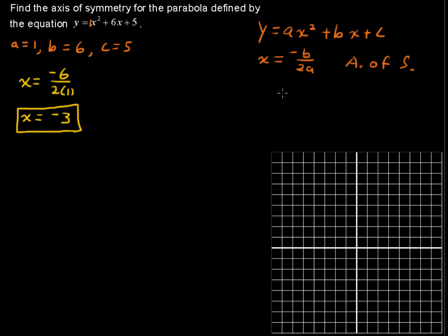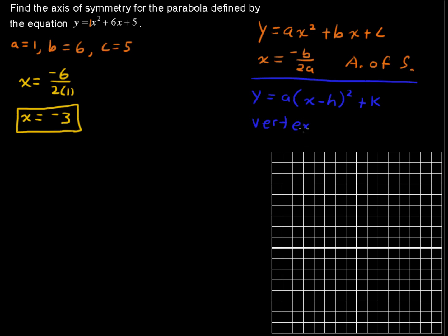Let's talk about another way to do this. If you have the equation in the form y equals some coefficient multiplied by the quantity x minus h, squared, plus k, then the vertex of the parabola is going to be at the point (h, k). So let's complete the square of this parabola and get it into that form.